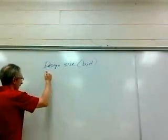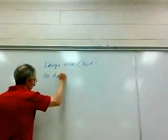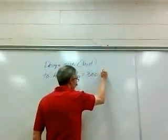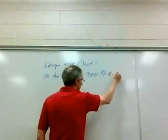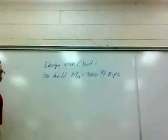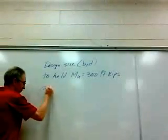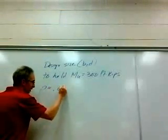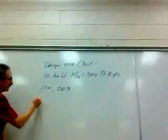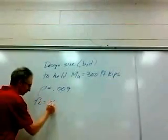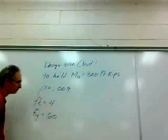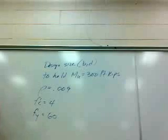Design the size of a beam to hold, say, MU is equal to 300 foot-kips. Of course, if we're doing this type of design, we're going to have to lock something else down. So I'll set my rho value as being 0.009. My f'c, my fy, being 4 ksi and 60 ksi.